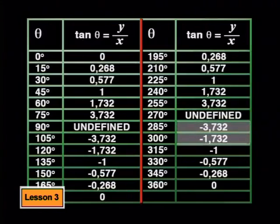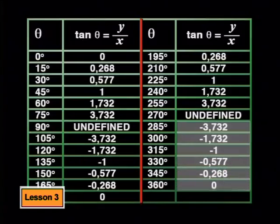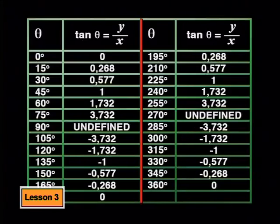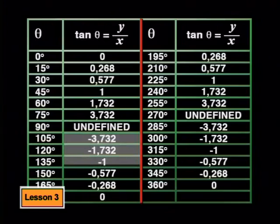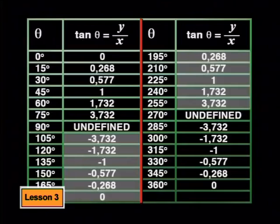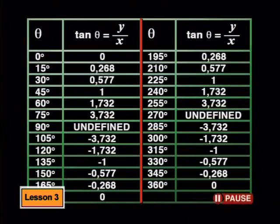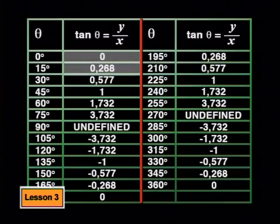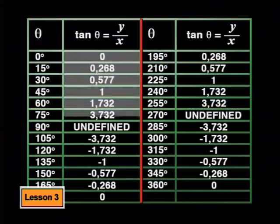From there, the y values go back to negative 3.73 and increase up to 0. So, there's a pattern that seems to repeat itself every 180 degrees. The tan ratio increases every time from negative 3.73 through to positive 3.73. What do you think happens to tan theta between 3.7 and this point where it's undefined? We can predict from the pattern we've seen that the y values continue to increase as the angle increases up to 90 degrees.